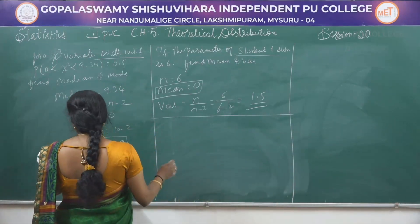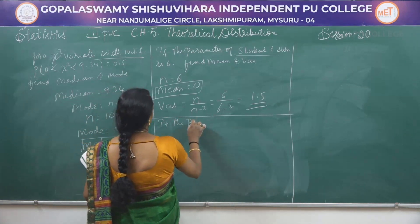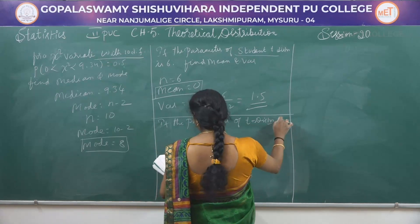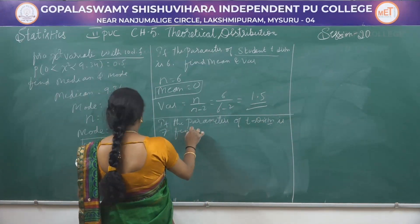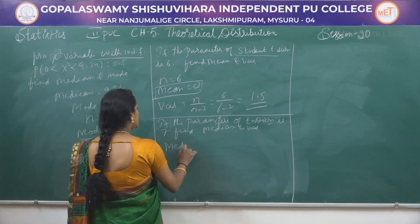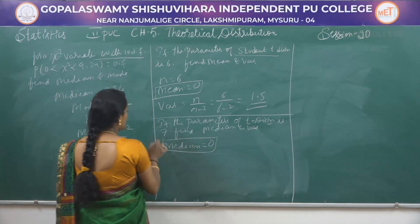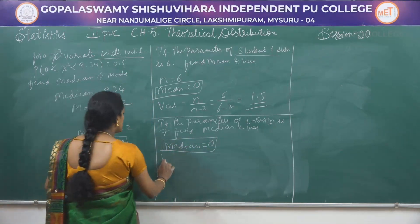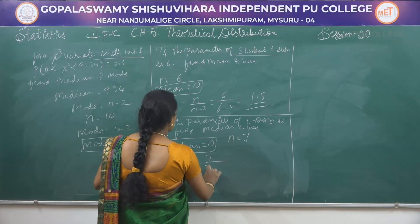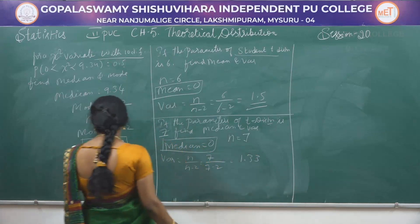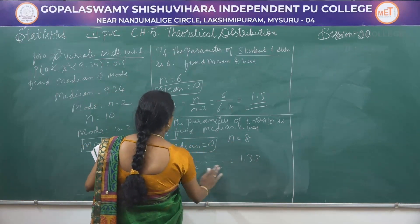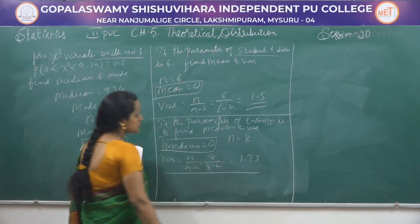Problem: If the parameter of t-distribution is 8, find median and variance. In t-distribution, median = 0. Variance = n / (n − 2) = 8 / (8 − 2) = 8 / 6 = 1.33.